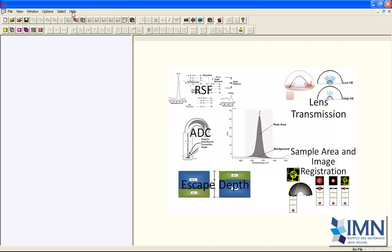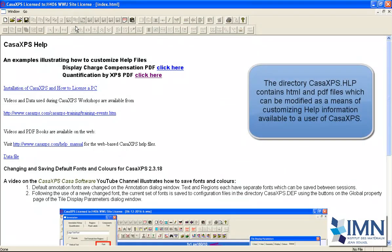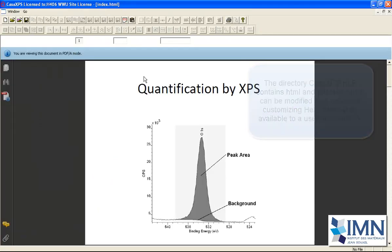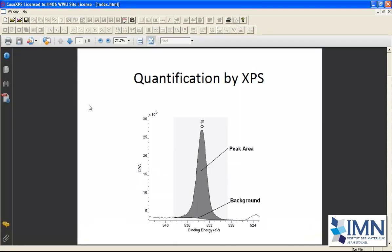XPS is a quantifiable technique in the sense that electrons leaving the sample have a probability of arriving at the detector and being recorded. The relationship between the electrons arriving at the detector and the electrons leaving the sample are a measure of the amount of substance.